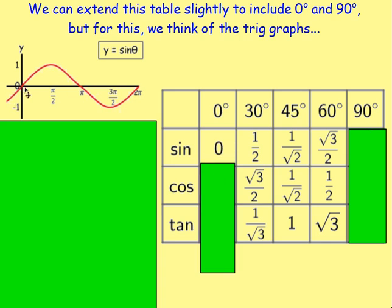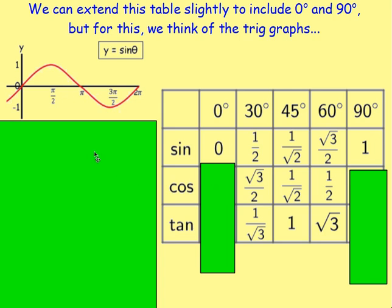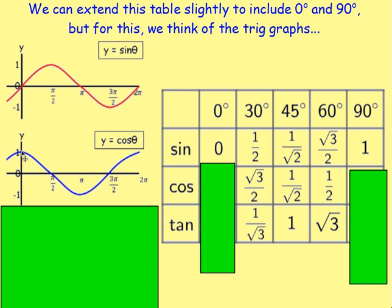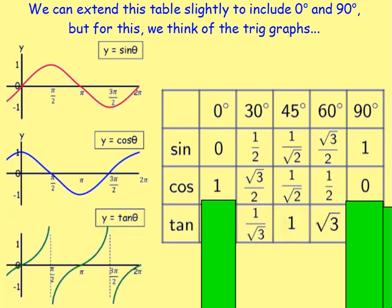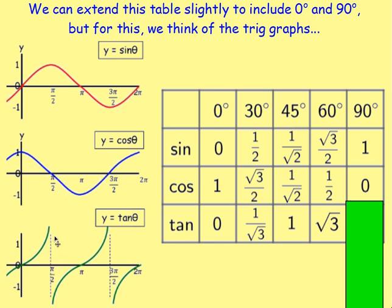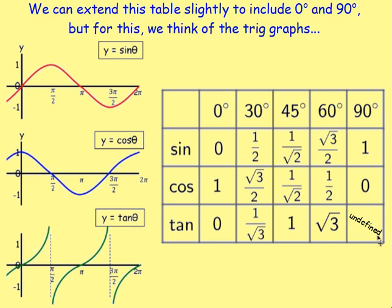Sine of 90 degrees: π/2 is 90, and the graph there is up at 1. For cos of 0, using the cos graph: cos of 0 is up at 1. Cos of 90: there's 90 degrees, π/2, so that's down at 0. For tan of 0 on the tan graph: tan of 0 is just 0. And at 90 degrees — π/2 — the tan graph gets closer and closer but never touches it, because that line is a vertical asymptote. So tan of 90 is undefined.